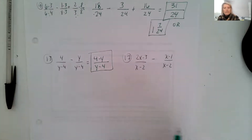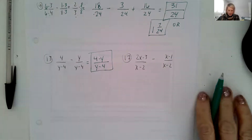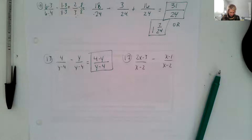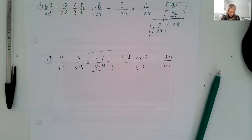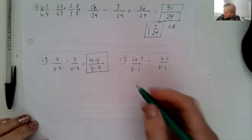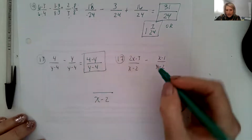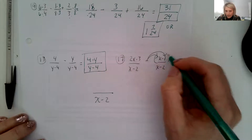Okay, seventeen. Go ahead and take a minute to write that down. Okay, so we already have common denominators, so we can go ahead and subtract our numerators. Our denominator is going to stay x minus two.